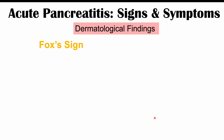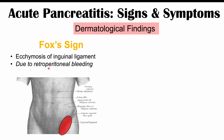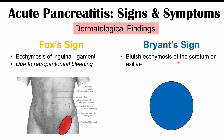Fox's sign is ecchymosis of the inguinal ligament — bruising in the inguinal area near the hip and groin — also due to retroperitoneal bleeding. Bryant's sign is a bluish ecchymosis of the scrotum or vulva; you can remember the bluish color by the B in Bryant's sign. Bryant's sign is also associated with ruptured abdominal aortic aneurysms.